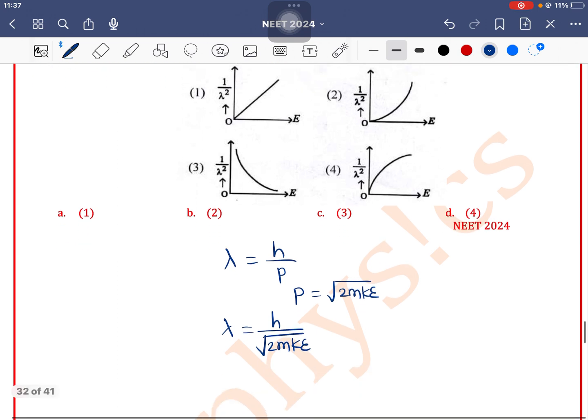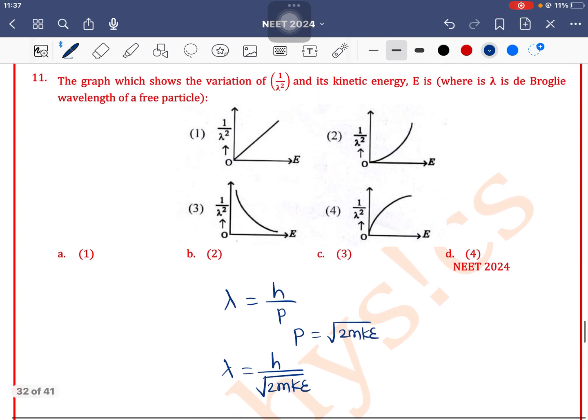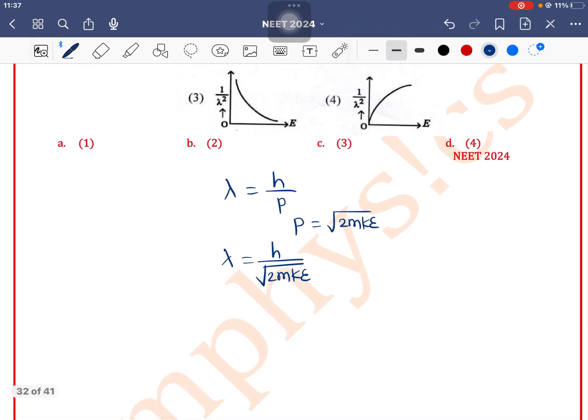For the graph question, we need the equation. Y axis has 1 by lambda square, X axis has energy. M and H constants can be ignored.